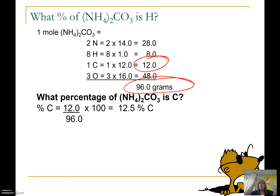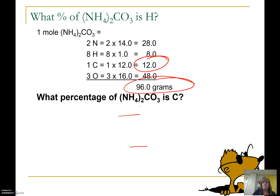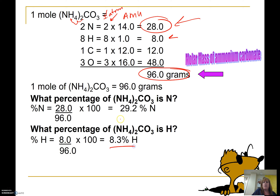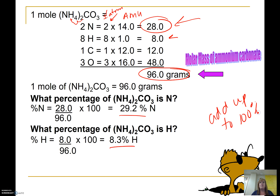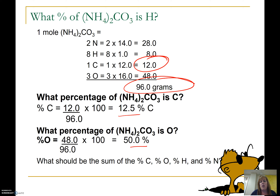For oxygen: 48 divided by 96 is 50%. Now the key is when I go back and add them up — 50 plus 12.5 plus 8.3 plus 29.2 — all of that should add up to 100%. It should be plus or minus a tiny bit, but very close to 100%. If it's not, then you did something wrong.